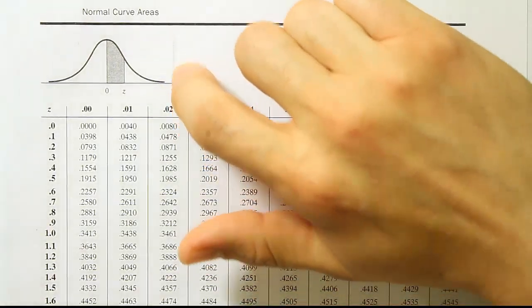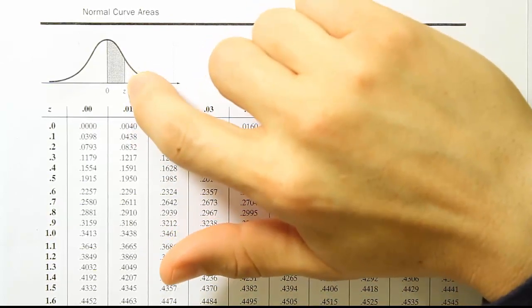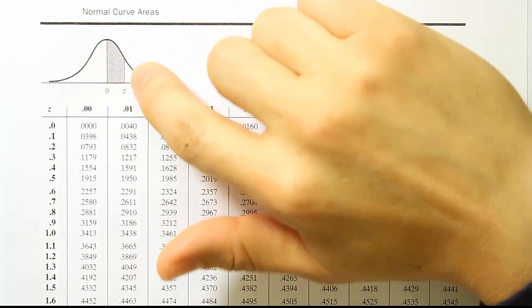Okay, so let's remember how the table reads. When you look at this little image, it tells us that the z-score we look up will give us the area from that z-score to the center where 0 is. Okay, so that's how this table reads.